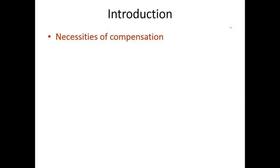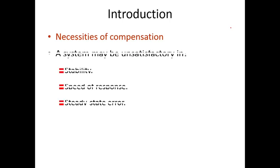A system may be unsatisfactory in several ways. The system can be unsatisfactory in terms of stability, speed of response, and steady-state error. If we want to improve these things — improve system stability, speed of response, and reduce steady-state error — in such cases we use compensators.